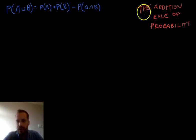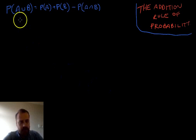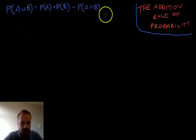Okay, so in this video I'm going to be looking at the addition rule of probability. We can see the addition rule here. The probability of A union B is equal to the probability of A plus the probability of B minus the probability of A intersection B. Now that looks very complicated, so we're going to have to break it down a little bit.